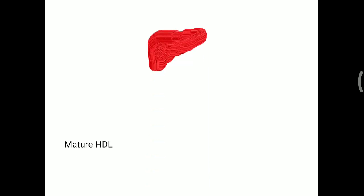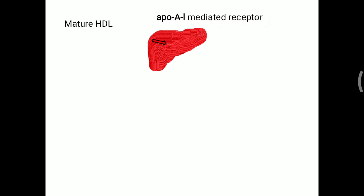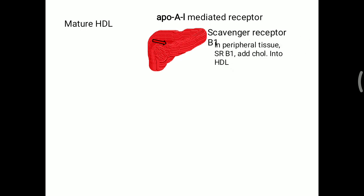The mature HDL, which is spherical in shape, will go to the liver. The same ApoA1 that activates LCAT mediates a receptor called scavenger receptor B1, or SR-B1. These receptors are present over the liver, and with the help of ApoA1, the mature HDL will be taken up inside the liver. This same receptor SR-B1 is also present in peripheral tissue.